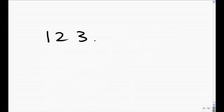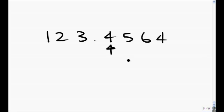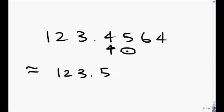When we consider the number 123.4564 and we want to approximate this number to the nearest tenths position, we locate the digit to the right of the decimal that's in the tenths position — in this case, it's the four. The digit to the right is a five, which means the approximate value is 123.5, because we add one to the four. The digit to the right being a five, six, seven, eight, or nine indicates that we add one to the four.